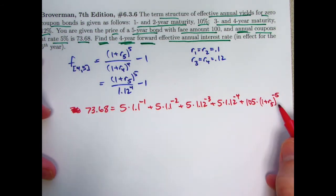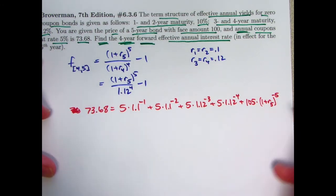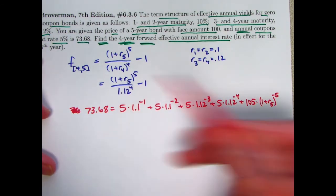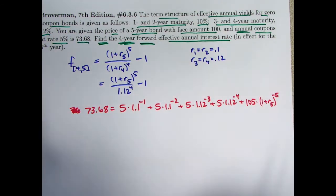And actually, we don't even have to solve for R5. We could solve for 1 plus R5 to the negative 5 power, and then take its reciprocal to get 1 plus R5 to the positive 5 power. So we don't actually have to solve for R5 here. We don't want to.